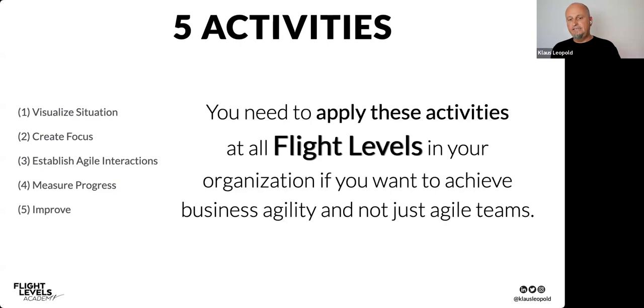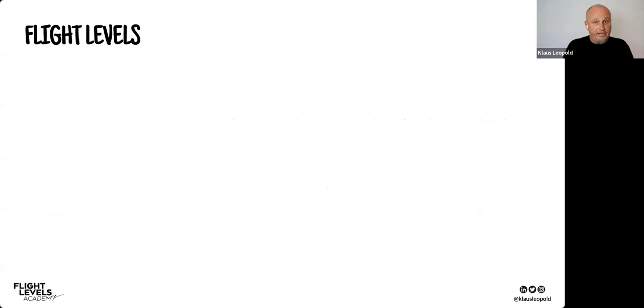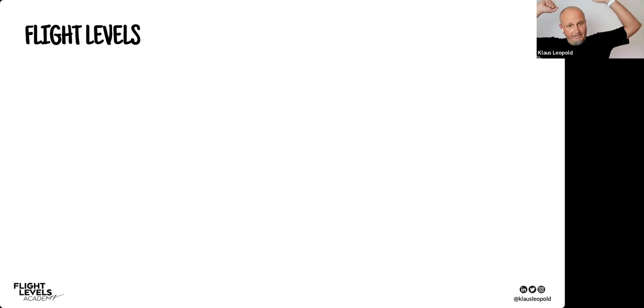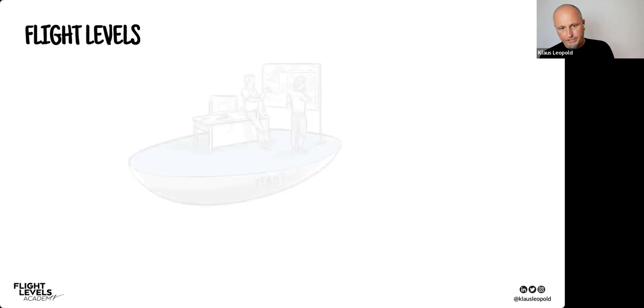We apply these five activities at three Flight Levels. 'Flight Level' is a term from aviation describing how high an aircraft is flying. Depending on altitude you see different things — not good or bad, just different. Flying very low you see lots of details: cars, people walking. Flying very high you see wide but without detail. The same is true in organizations.